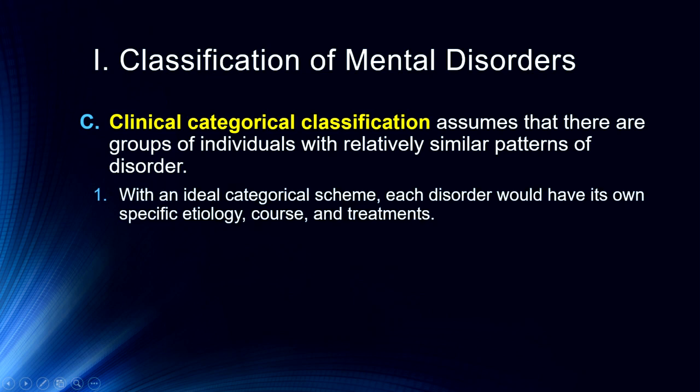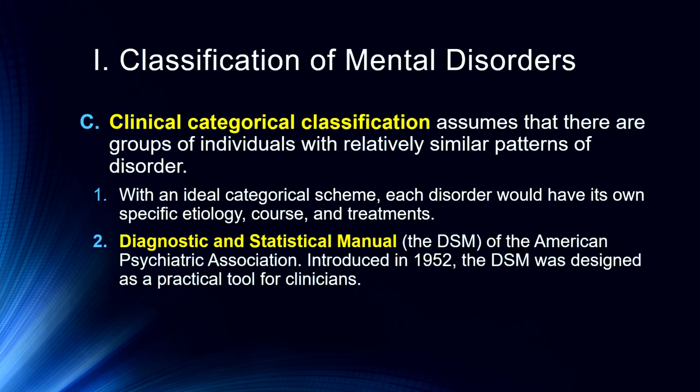None of this is as neat and tidy as we'd like. With an ideal categorical scheme, each disorder would have its own specific etiology, course, and treatment — here's what causes it, here's how it progresses, here's how we treat it. Unfortunately, that's not how this usually works. We do our best; we certainly don't understand the etiology of all mental disorders, though we're getting a lot better. When we talk about depression, for example, we'll discuss the underlying neural pathology.